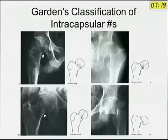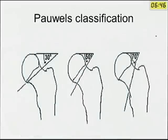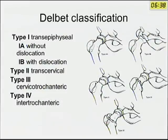Regarding classifications, Garden's classification is the most commonly used throughout India. It is more based on displacement rather than the trabecular pattern itself. Grades 1 and 2 are undisplaced: grade 1 is incomplete with impaction, grade 2 is complete. Grades 3 and 4 are displaced: grade 3 is partially displaced and grade 4 is completely displaced. In Pauwels' classification, the angle of the fracture ranges from 30 to 70 degrees, 70 degrees being grade 3. For children's fractures, Delbet's classification is useful: type 1 is transphyseal, type 2 transcervical, type 3 cervicotrochaneric, and type 4 intertrochanteric.